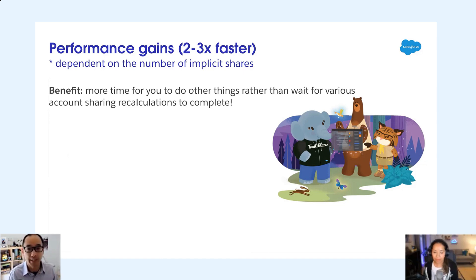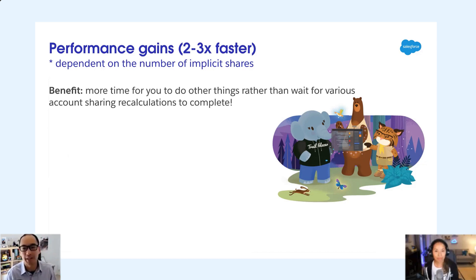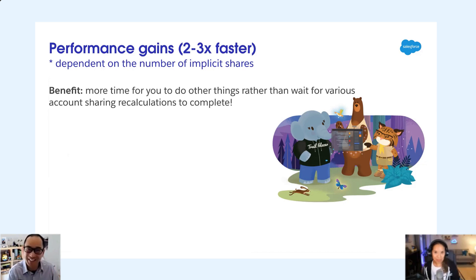Our Salesforce IT team ran a test. They created an account sharing rule before the feature was on, and it took 15 minutes. When they turned the feature on — no longer doing all these computations and writing implicit child shares to the database — it took three minutes. Still takes some time; we have a lot of records. But three minutes is pretty good compared to 15. Hopefully you won't see 15 minutes when your admin is changing things, but we really hope you'll see a pretty good boost.